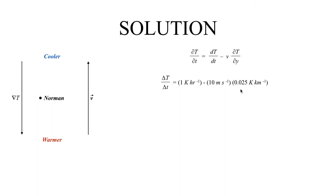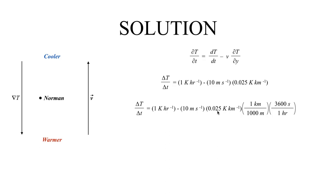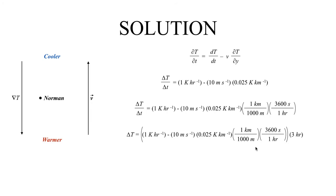So plugging that in, there should be a negative sign out front because the temperature gradient points to the south — so that becomes negative 0.025 Kelvin per kilometer multiplied by positive 10 meters per second, making this a plus sign overall. We also have to do some unit conversions to get consistent units, converting kilometers to meters and hours to seconds. Then multiplying by the time increment delta t of three hours gives us our result.